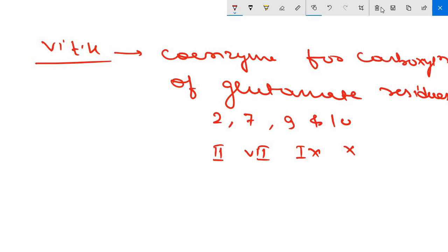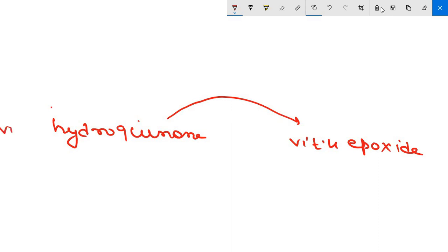Now, going for the mechanism how carboxylation is occurring. This is your vitamin K, reduced vitamin K, that is hydroquinone, because hydrogen is added. So it is reduced form. Reduced vitamin K, that is hydroquinone, is oxidized to its epoxide form, that is vitamin K epoxide form.